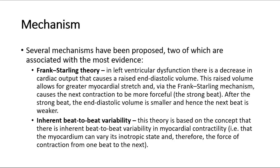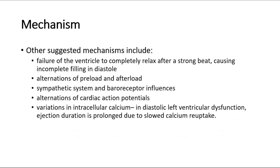The first is the Frank-Starling theory. In left ventricular dysfunction, there is a decrease in cardiac output that causes a raised end diastolic volume. This raised volume allows for greater myocardial stretch, and via the Frank-Starling mechanism, causes the next contraction to be more forceful. After the strong beat, the end diastolic volume is smaller, and hence the next beat is weaker. The second theory is inherent beat-to-beat variability in myocardial contractility. The myocardium can vary its inotropic state, and therefore the force of contraction from one beat to the next. There are also other suggested mechanisms, such as failure of the ventricle to completely relax after a strong beat, causing incomplete filling in diastole.